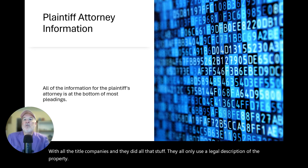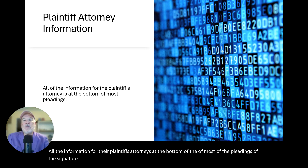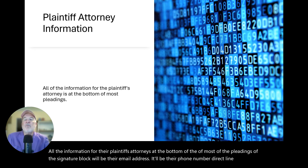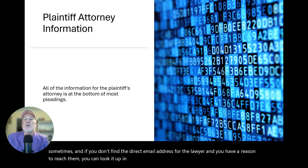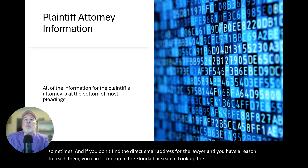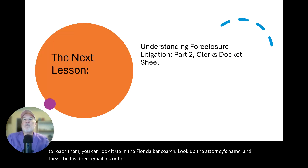All the information for the plaintiff's attorneys will be at the bottom of most pleadings at the signature block — their email address, phone number, sometimes a direct line. If you don't find the direct email address for the lawyer and you have a reason to reach them, you can look it up in the Florida Bar Search. Look up the attorney's name and there'll be their direct email, his or her, if you need to get it.